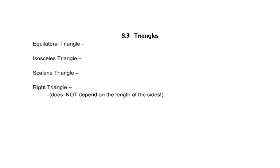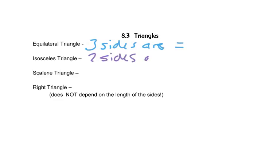In this video we'll look at triangles more carefully. An equilateral triangle is one where all three sides are the same length. An isosceles triangle is a triangle that has two sides the same length. And a scalene triangle has no equal sides.